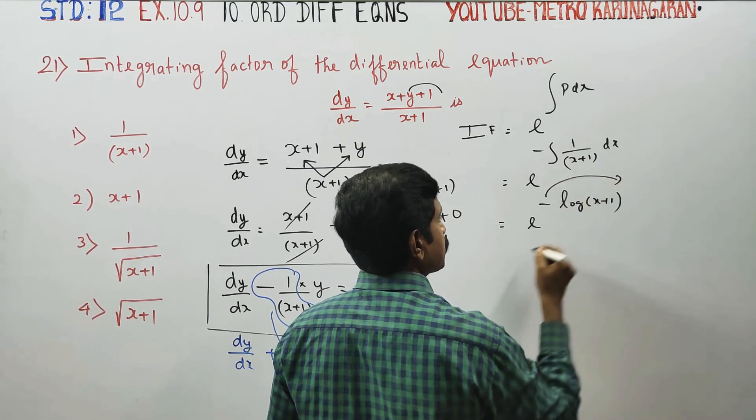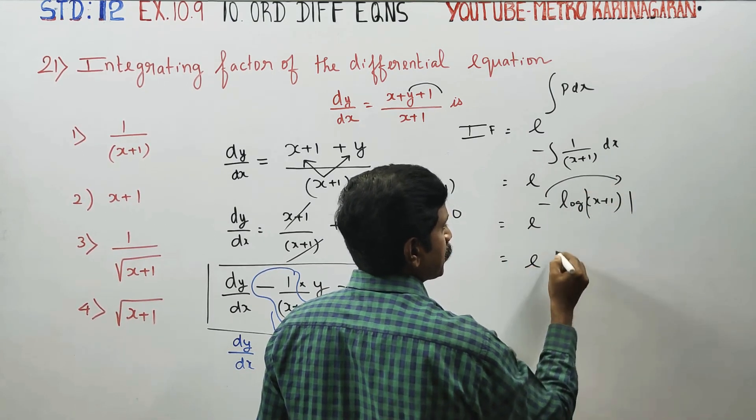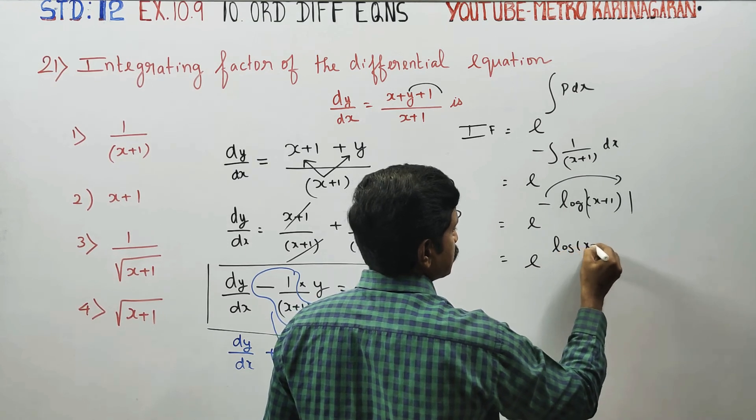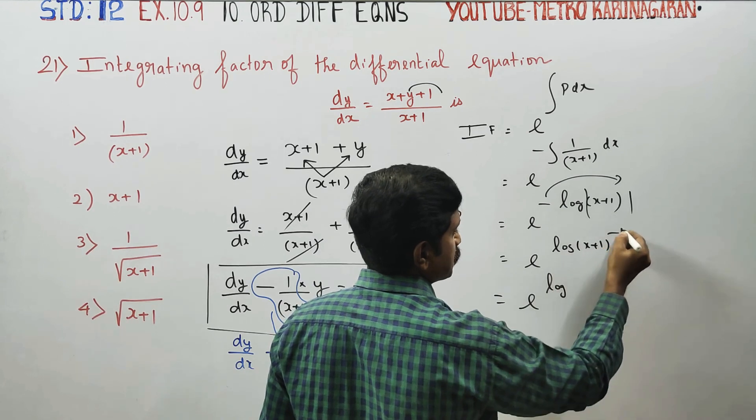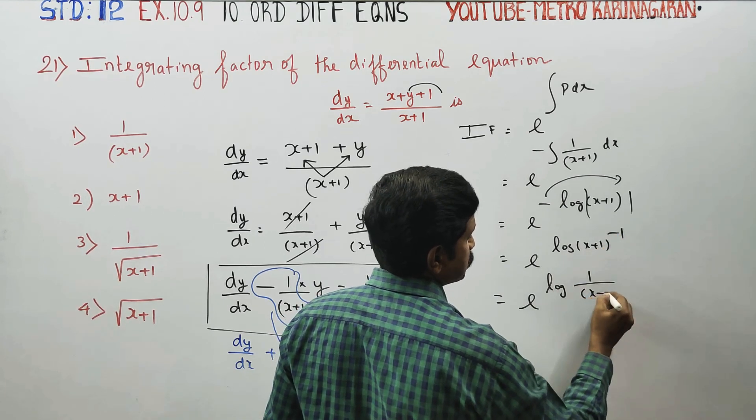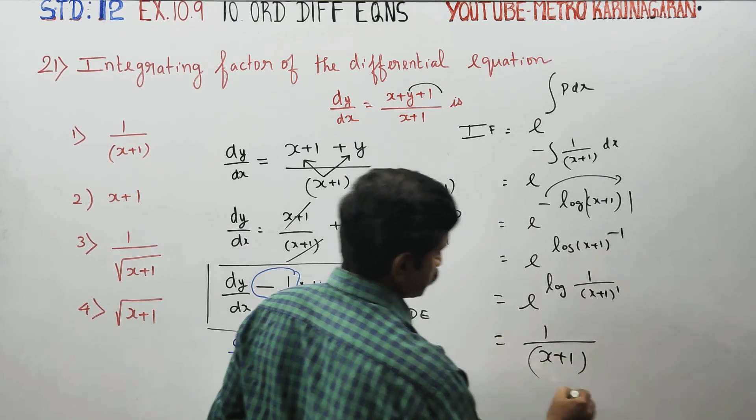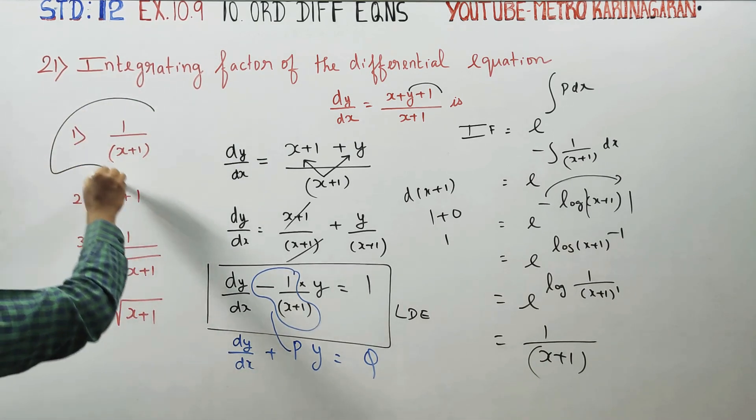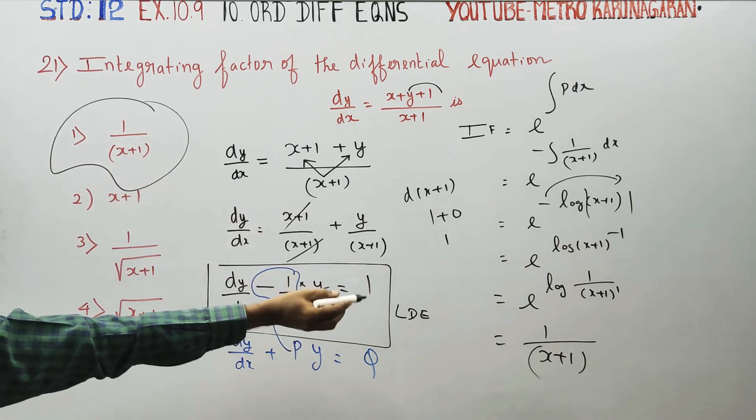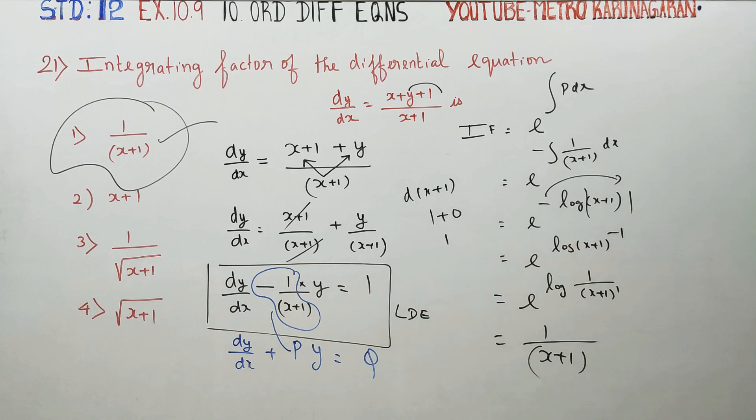Minus from outside, if you take it as a power, that gives e power logarithm of x plus 1 power minus 1, which is 1 by x plus 1. e log cancels, so your answer is 1 by x plus 1. Check the options, the first answer matches with 1 by x plus 1. Therefore this is your integrating factor for this 1 mark question.